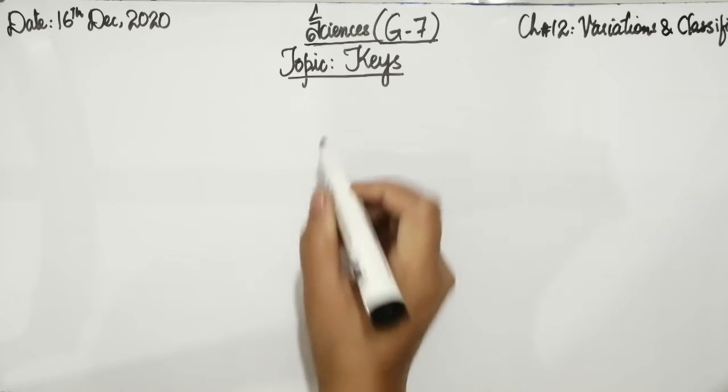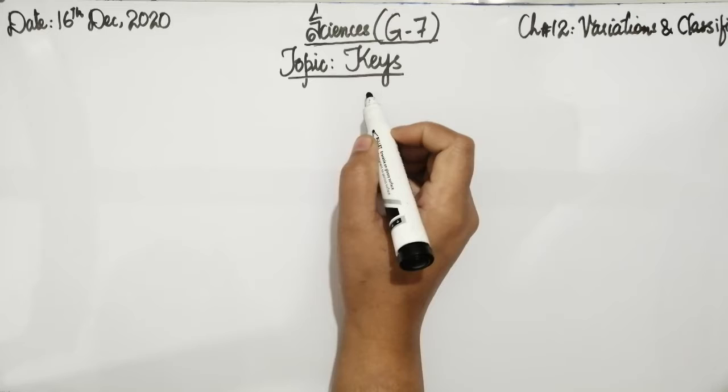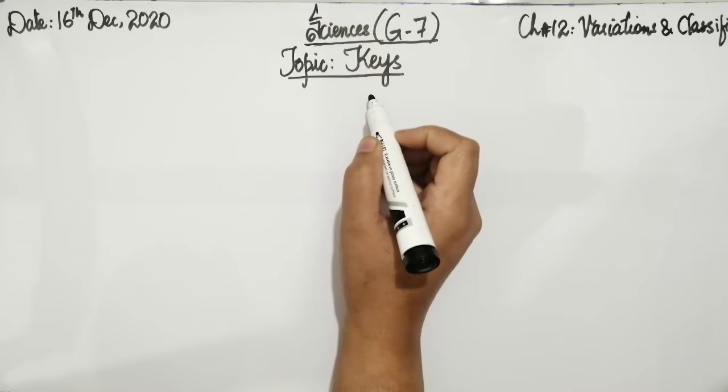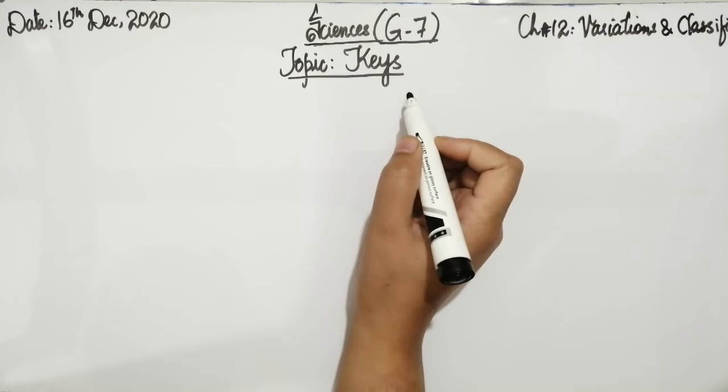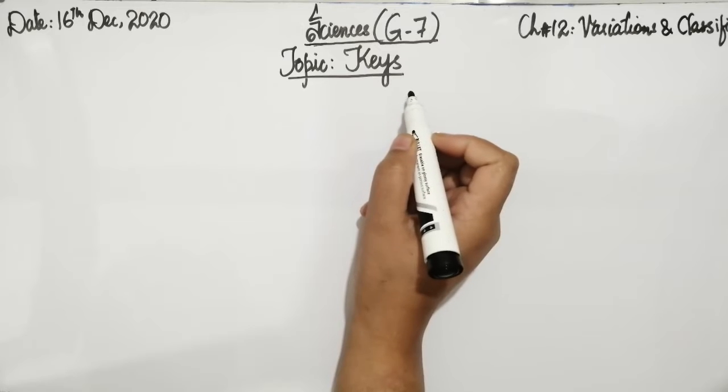Today we are going to discuss about the topic keys. Now what are these keys? Keys can be used to find the names of organisms that we cannot recognize.